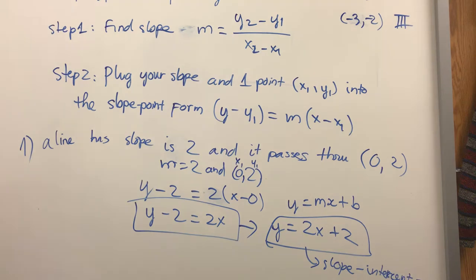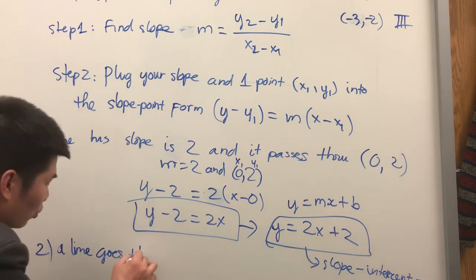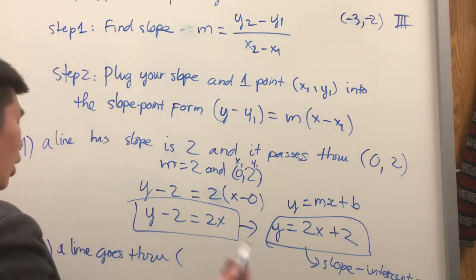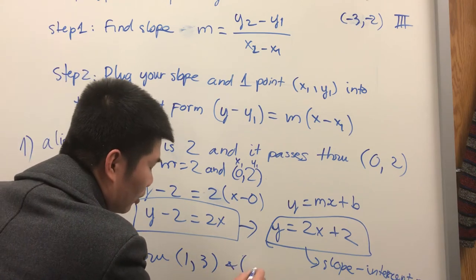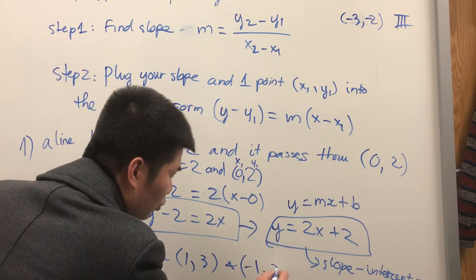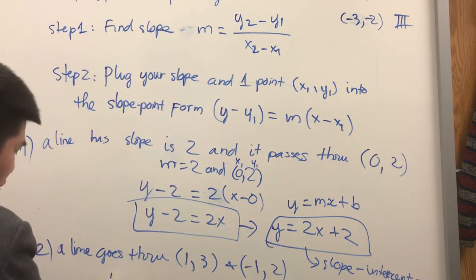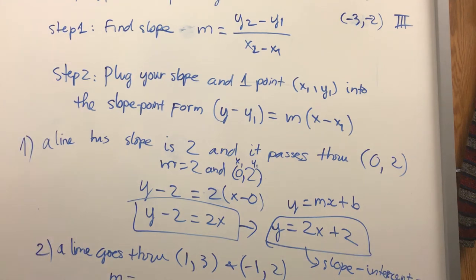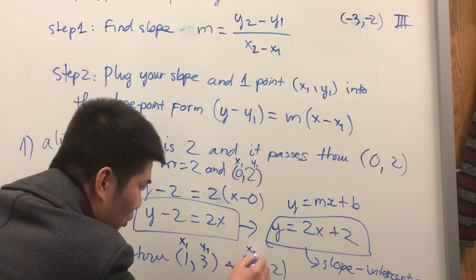Another problem: instead of giving you the slope directly, a line goes through two points — (1, 3) and (-1, 2). What should I do? First step: find the slope. I'll mark x1, y1, x2, y2 and apply the formula m equals (y2 minus y1) over (x2 minus x1).